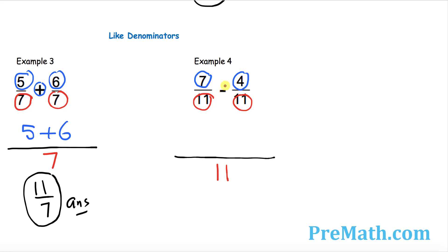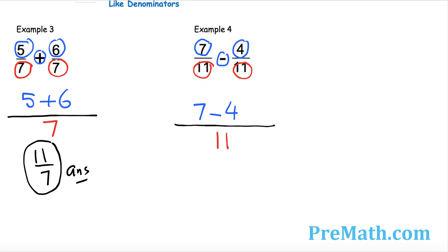And then focus on its top numbers, or we call it numerator, the top numbers which is 7 and 4 with a minus sign in between. So I just want you to put down 7 minus 4. Next step is just simplify: 7 take away 4 is 3, so 3 over 11 is our answer. Piece of cake.